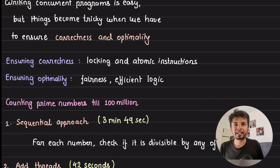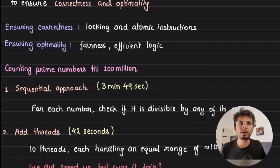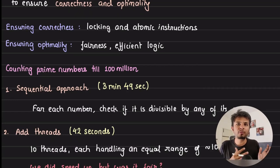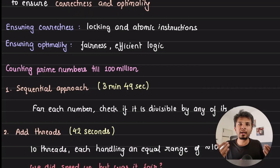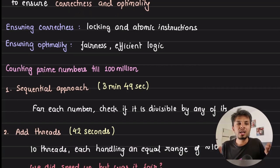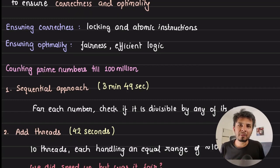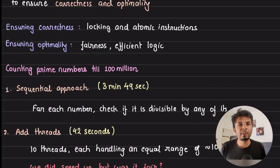We won't talk about that in depth. What we're more interested in is the fairness of our code to ensure optimality. We don't want a situation where, if my program runs on 10 threads, one thread is not doing a lot of work while another is overburdened. That means there's no fair allocation across my threads. If there is one thread sitting idle but another is grinding, my overall execution time is lengthened — and we don't want that.